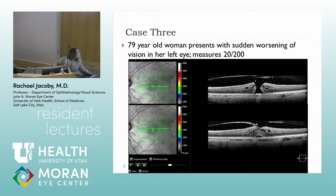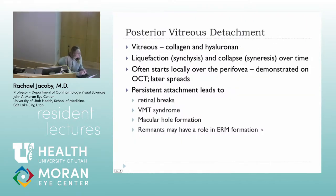Later that day I saw another patient who does have visual complaints — vision was 20/200 with loss of vision inside for a couple weeks. On OCT you can see a full thickness macular hole, and scrolling through the OCT, the hyaloid is still attached with traction present. You can also see the hyaloid lifting in the parafoveal region but still adherent right over the central fovea.